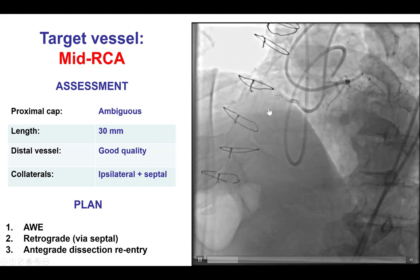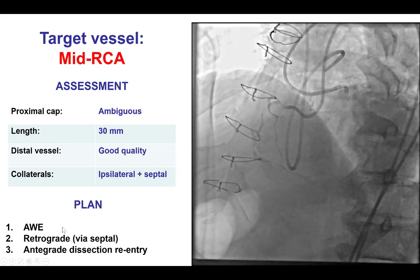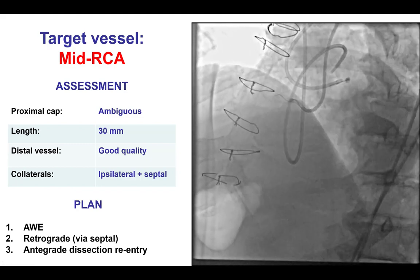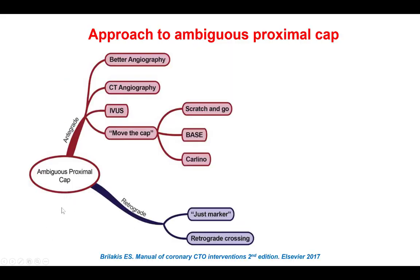Given the proximal cap ambiguity, our first plan was to do multiple angiographic projections to see if we could clarify the ambiguity, followed by retrograde, leaving ADR as a third option. This is the general algorithm for approaching proximal cap ambiguity. The first step is to obtain a better angiogram in multiple projections to clarify the ambiguity and determine the actual course of the vessel. Another way to overcome the ambiguity is to do a CT angiogram to determine the course of the vessel.